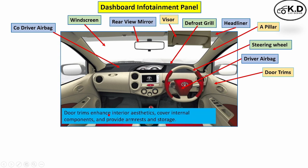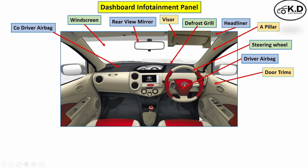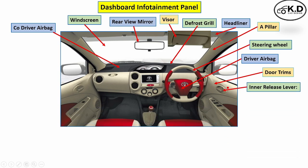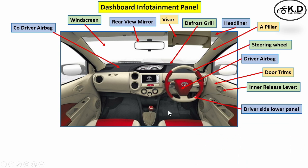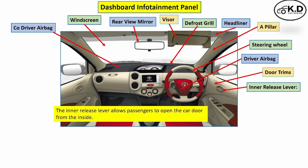The next part is the door trims. The function of the door trim is to hide the structural part, give appearance, and also provide the armrest and some storage. The next part is the inner release lever, whose function is to open the door from the inside.